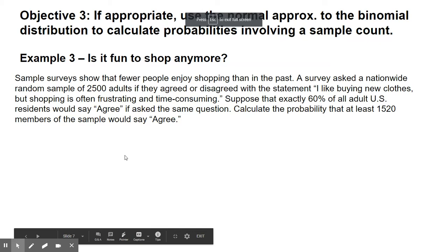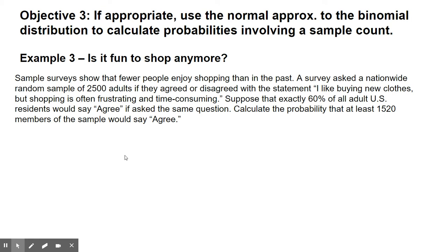All right, last but not least, objective three. So now we're going to use a normal approximation to the binomial distribution to calculate probabilities. Example three: Is it fun to shop anymore? Sample surveys show that fewer people enjoy shopping than in the past. A survey asked a nationwide random sample of 2,500 adults if they agreed or disagreed with the statement 'I like buying new clothes, but shopping is often frustrating and time-consuming.' Suppose that 60% of all U.S. residents would say agree if asked the same question. Calculate the probability that at least 1,520 members of the sample would say agree.